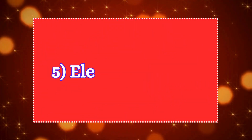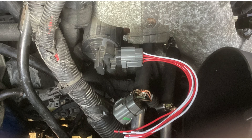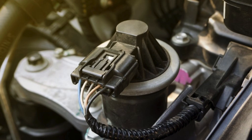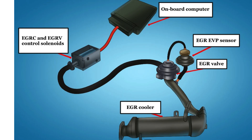Five: electrical issues. Wiring or connector problems, such as corroded or damaged wires, can interfere with the EGR system's operation, leading to the P0400 code.